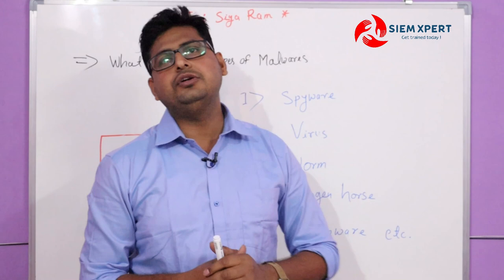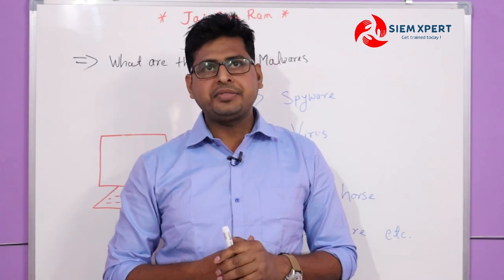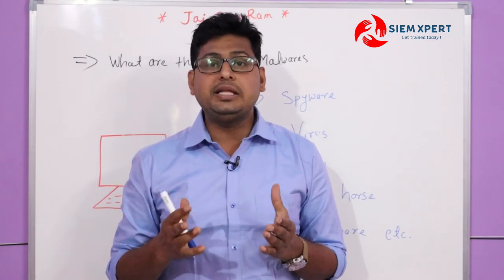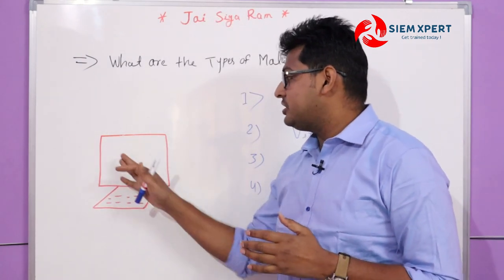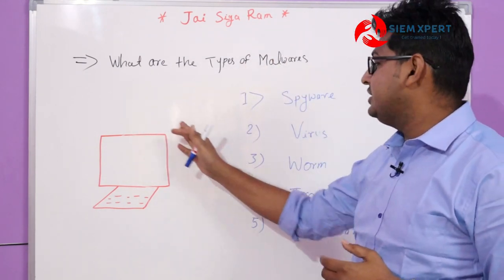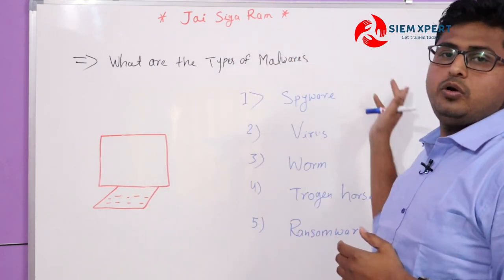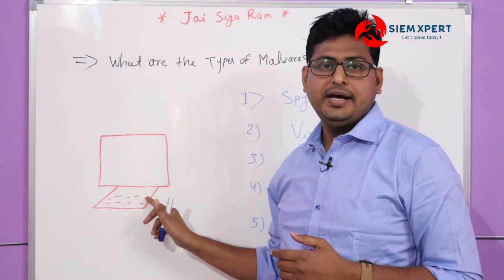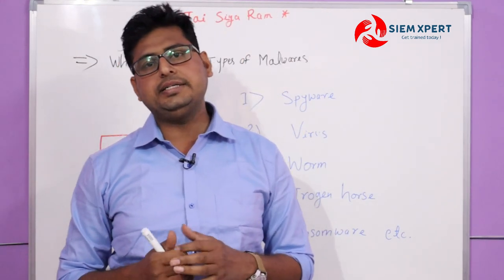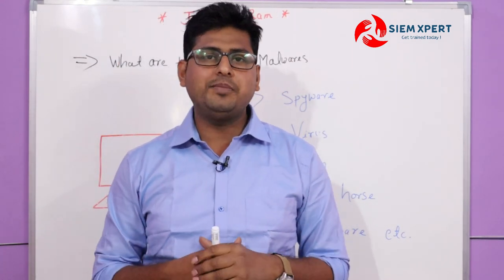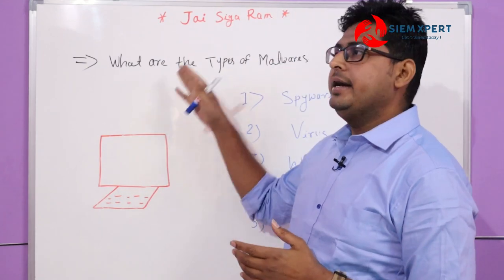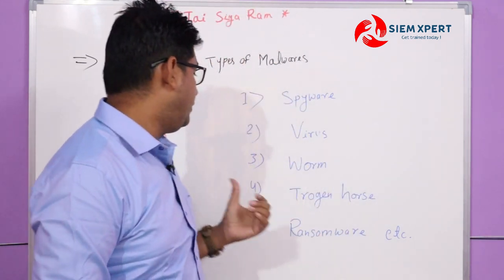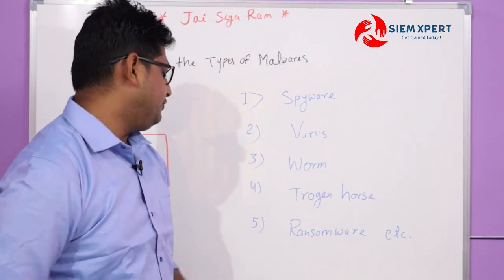The next type of malware is Trojan horse. If a Trojan horse is installed on your system, it will create a backdoor. Once installed, it gives control to the attacker — the attacker can control your machine, deploy more malicious software, and launch attacks on other companies using your system.